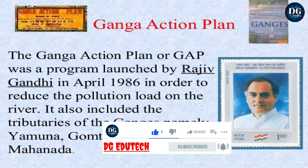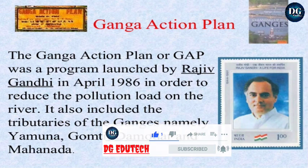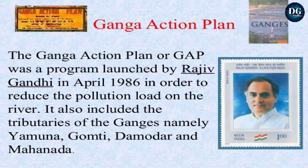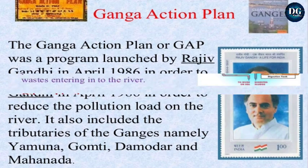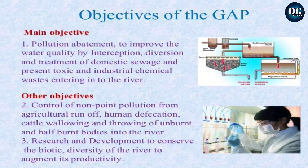The Ganga Action Plan also included tributaries of the Ganga, namely the Yamuna, Gomti, the Damodar, and Mahananda. The main objective of the Ganga Action Plan is pollution abatement — to improve water quality by interception, diversion, and treatment of domestic sewage, and to prevent toxic and industrial chemical waste from entering the river.